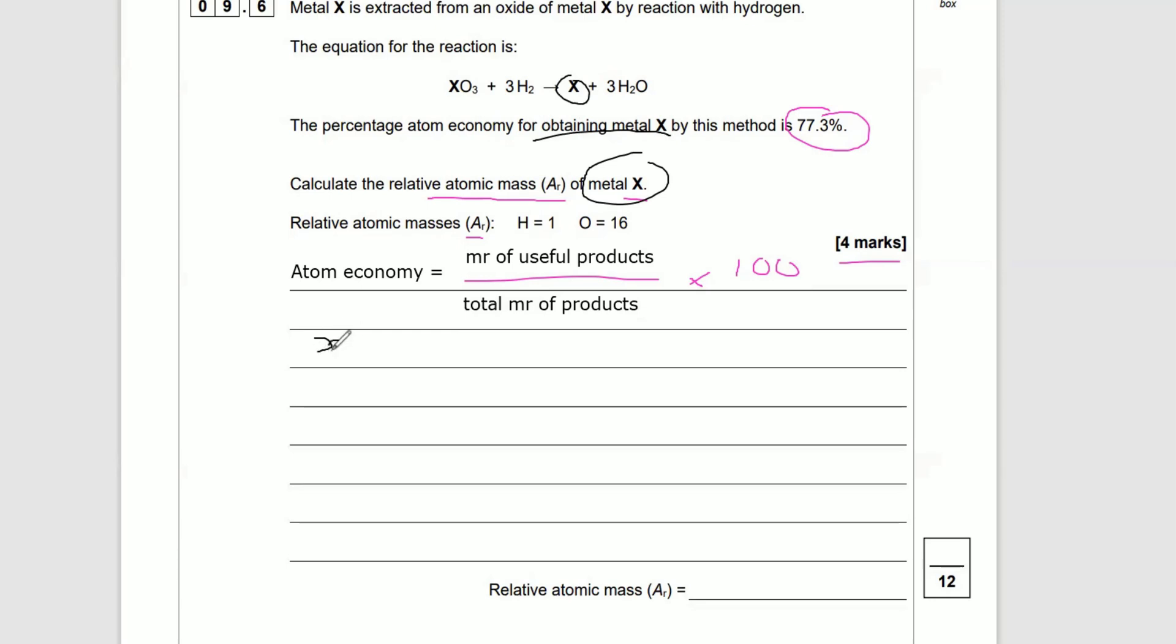So we're going to set out our equation like this: X over the total Mr, which is going to be X plus 3H2O, times 100 is equal to 77.3.